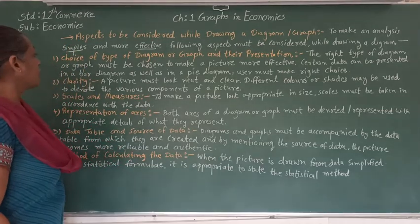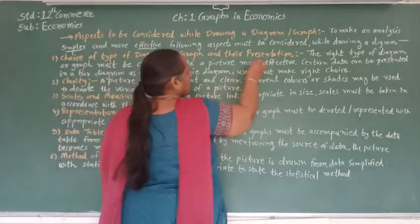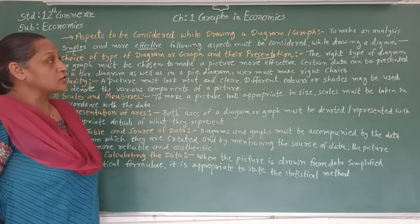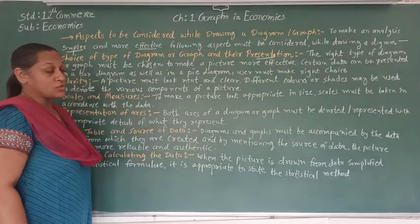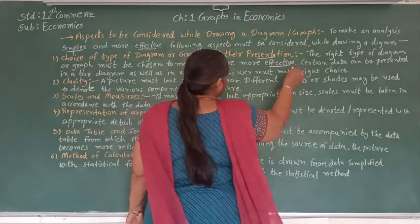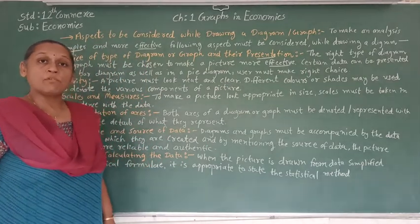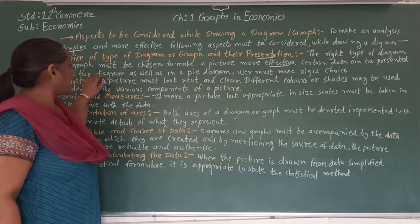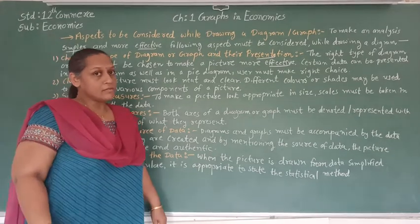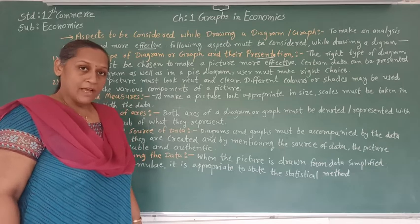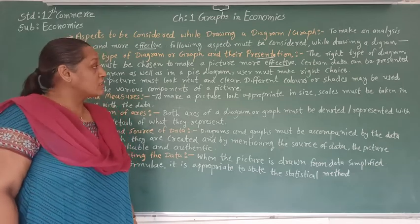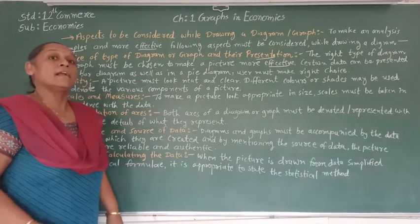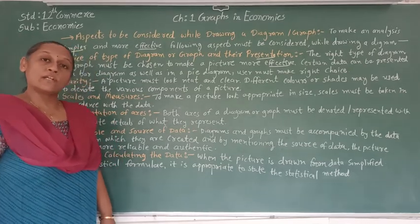The first aspect is the choice of type of diagram or graph and their presentation area. The right type of diagram or graph must be chosen to make the picture more effective. Certain data can be presented in a bar diagram as well as a pie diagram, so it is dependent upon the user which one they want to choose. The choice of the right type of diagram or graph and their presentation is very important.